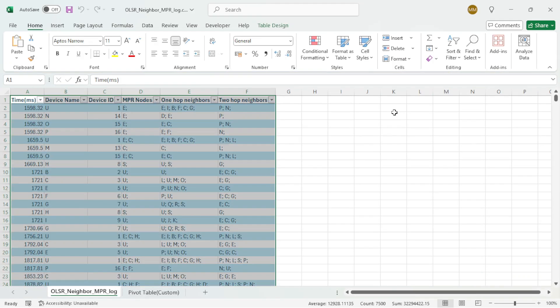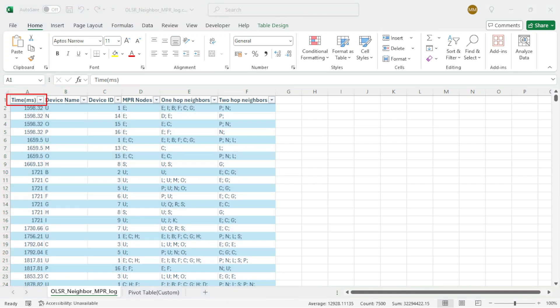Navigate to the Logs tab in the dashboard and open the file OLSR Neighbor MPR Logged.csv. Wait for the Excel sheet to load. Here's what the log file contains: Time in milliseconds, the time at which the MPR set for a specific node is updated. Device Name, the name of the current device for which the MPR set is calculated. Device ID, the ID of the current device. MPR Nodes, the MPR set selected for the device listed in the Device Name column. 1-Hop Neighbors, the set of nodes that are 1 hop away. 2-Hop Neighbors, the set of nodes that are 2 hops away.